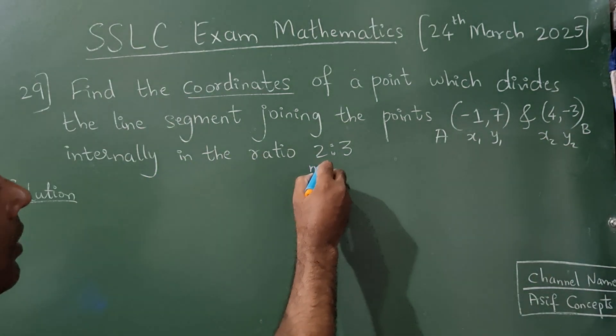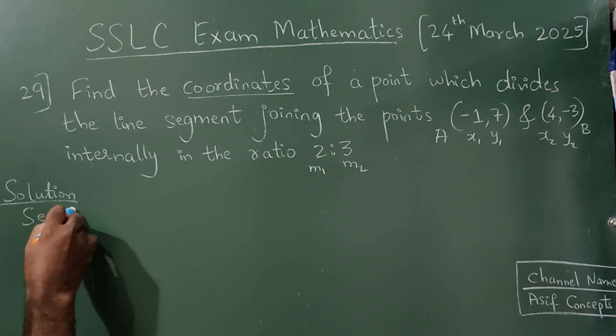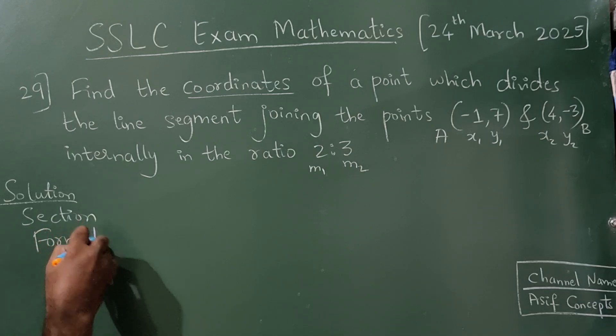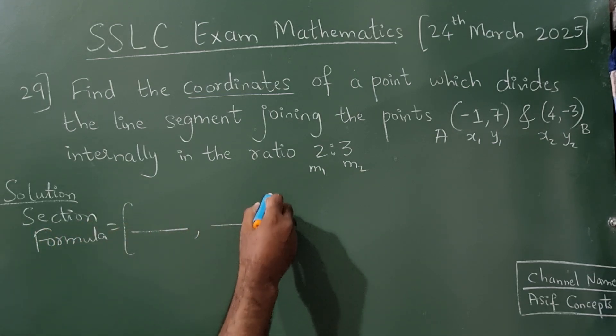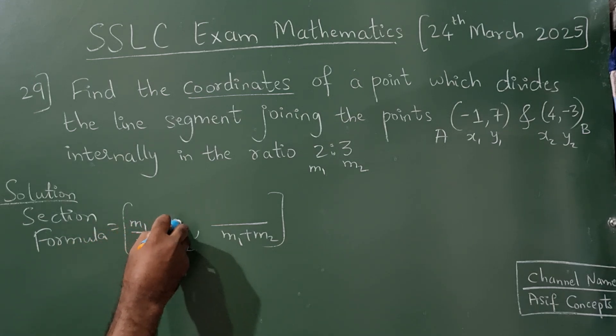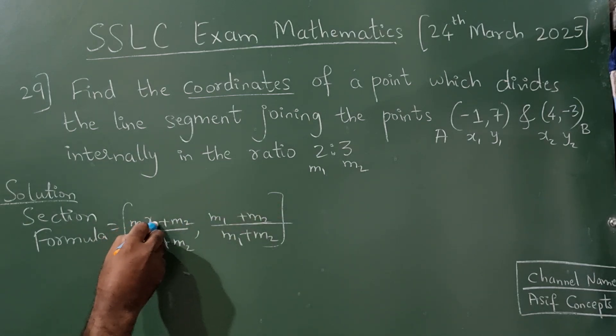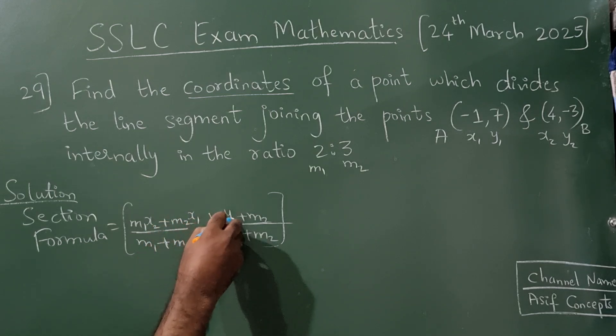Now there is a formula, section formula. How to remember the formula? First, m1 plus m2 in the denominator, here also write m1 plus m2. In the numerator also write m1 plus m2, here you write m1 plus m2. Now here you write x2, here you write x1. Same way, write here y2 and right here y1. This is how you need to remember the formula.